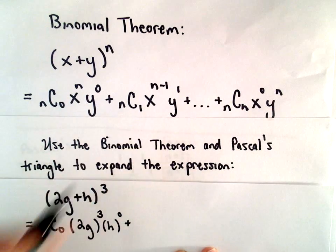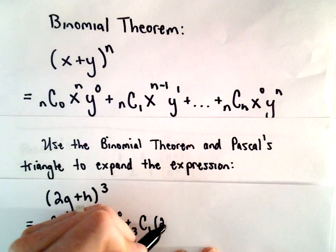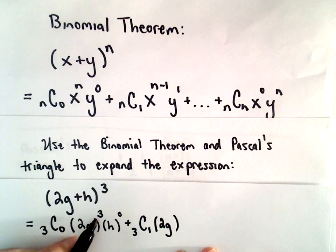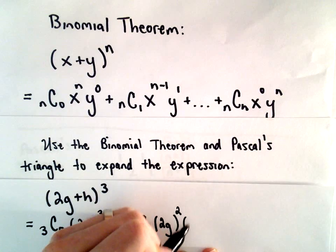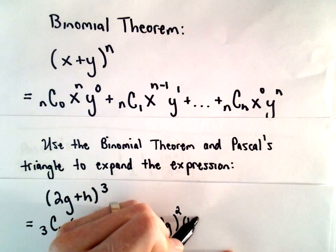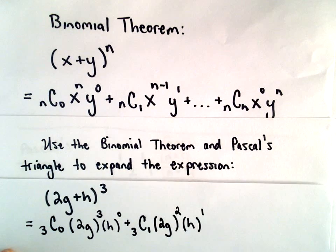Our next term will have 3 choose 1. Again, we take the first term, which is 2g, but now we start decreasing its exponent. So that will be to the second power. The other term, which is h, we increase its exponent by 1. And we basically just keep this process up.